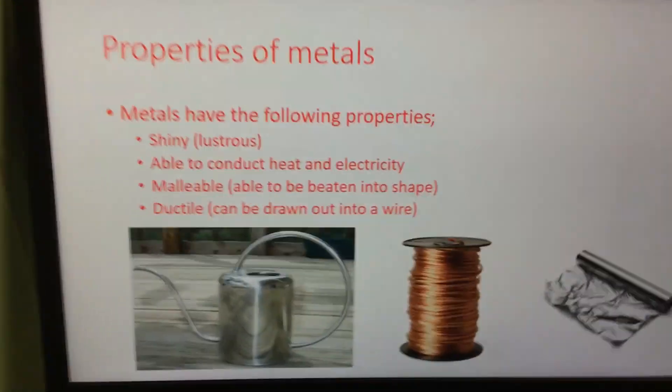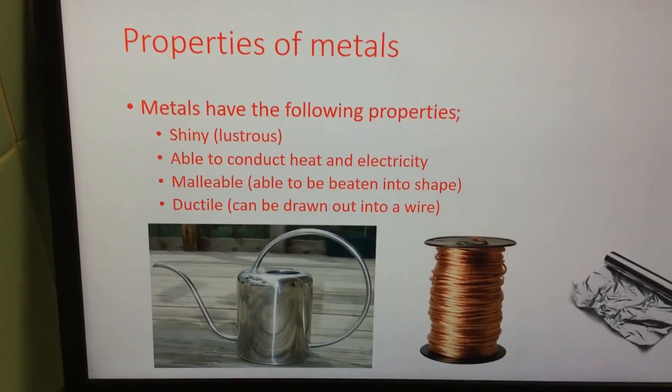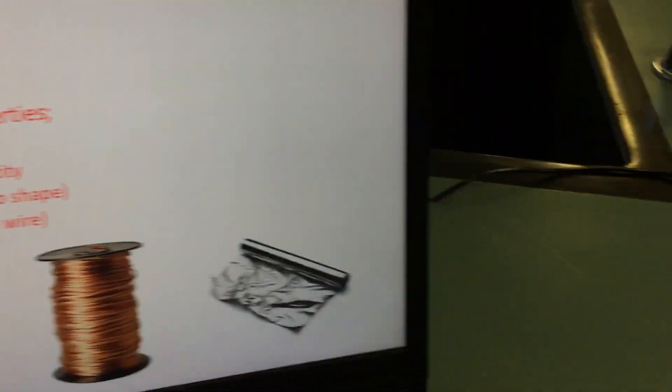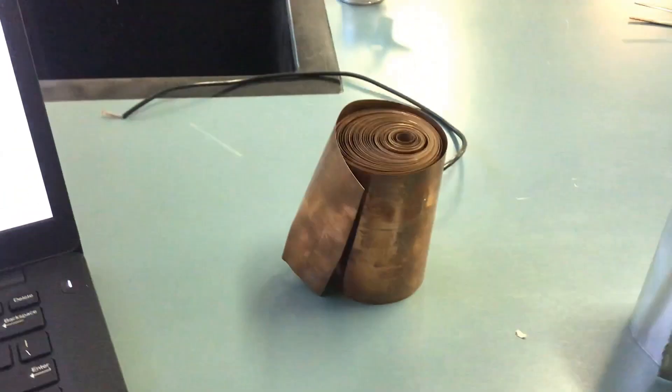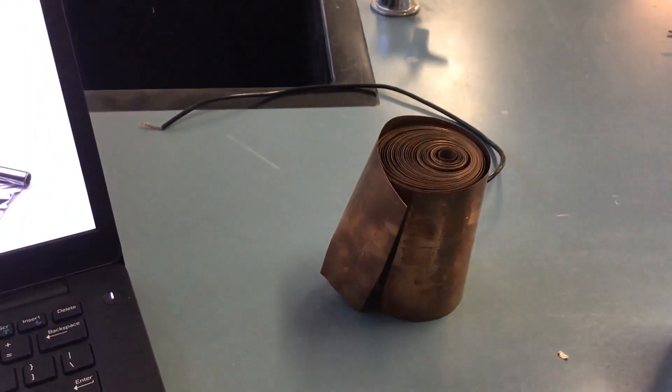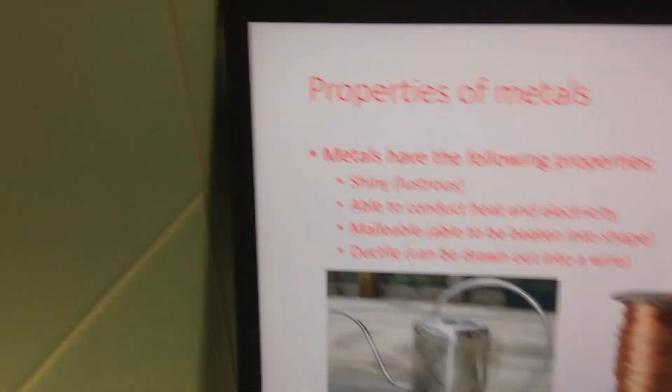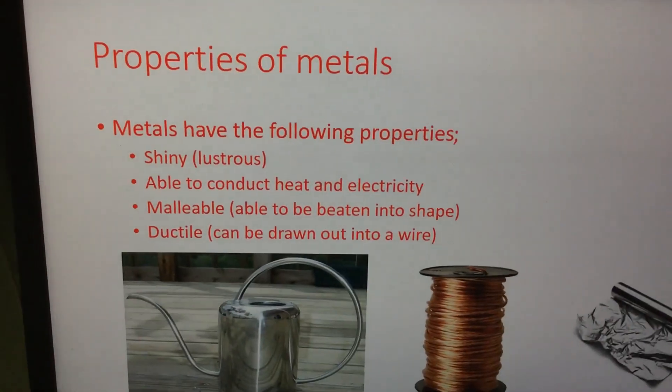The words used are able to be beaten into shape. Now I probably didn't beat it into shape, but hopefully the idea that I could twist and form that copper metal into any types of shape that I like sort of demonstrates to you what is meant by malleable.